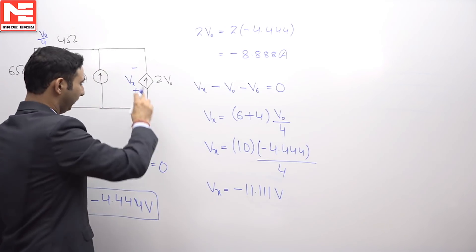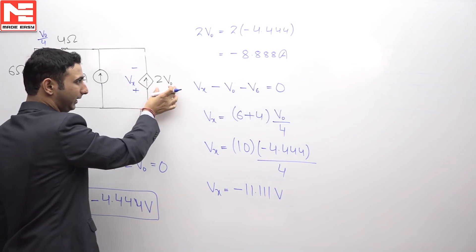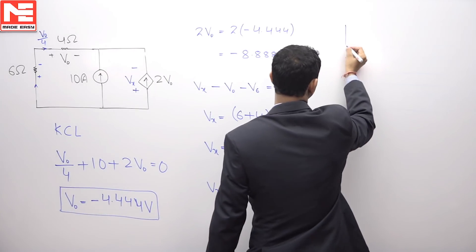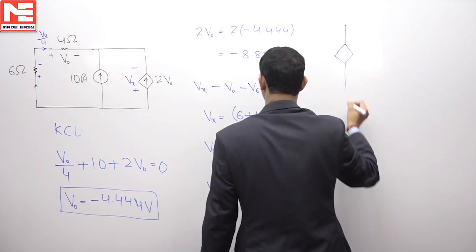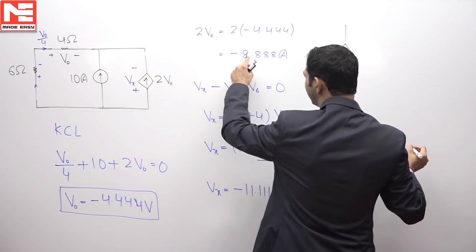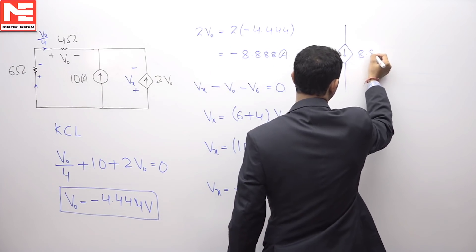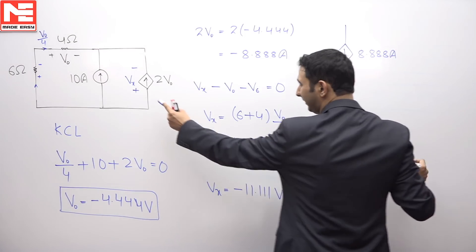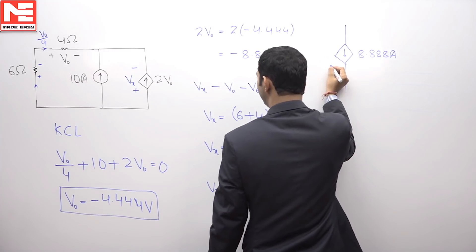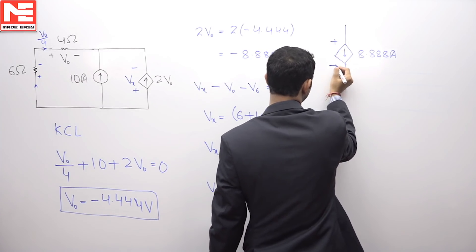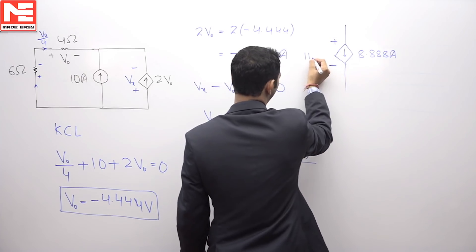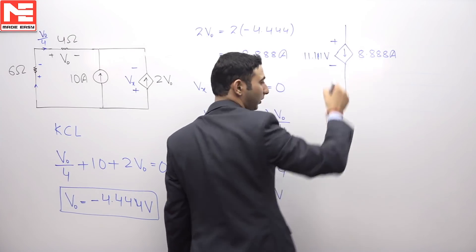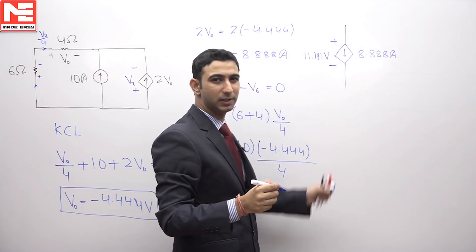If you see, the voltage is also coming as negative and the current is also coming as negative. So the direction will be reversed — the current 2V0 is negative, meaning in the downward direction 8.888 amperes of current is flowing. The voltage is also negative, so the polarities will get reversed: it will be minus at the top and plus at the bottom, and the value of the voltage is 11.111 volts. Now you can see the current is entering into the positive terminal, which means this dependent source is absorbing the power.